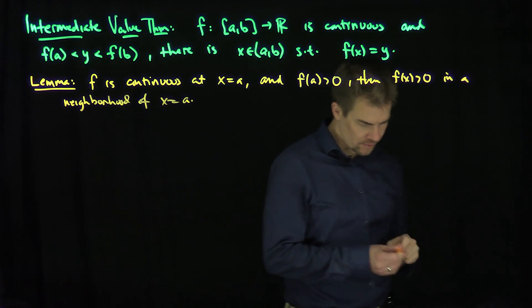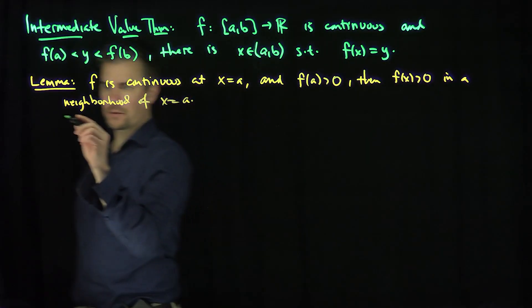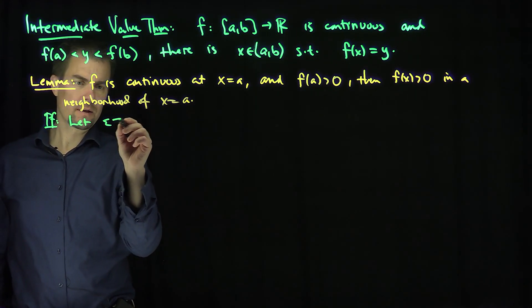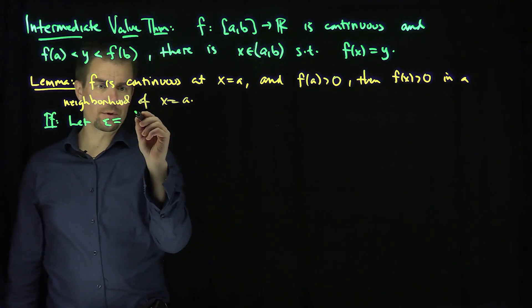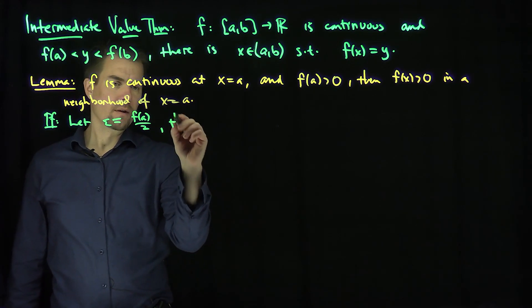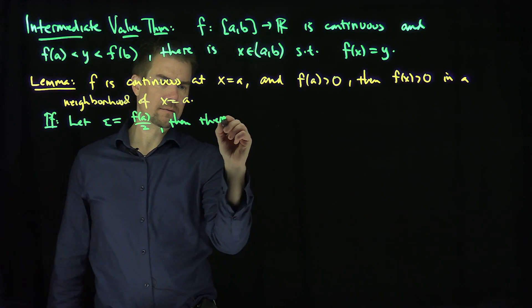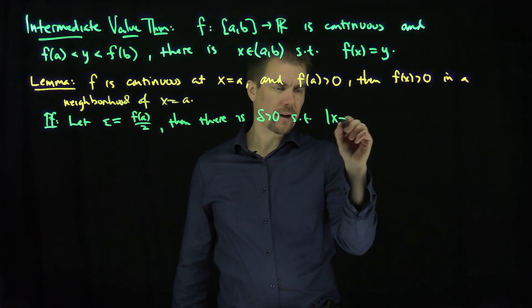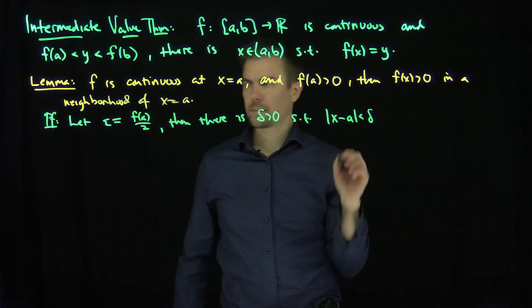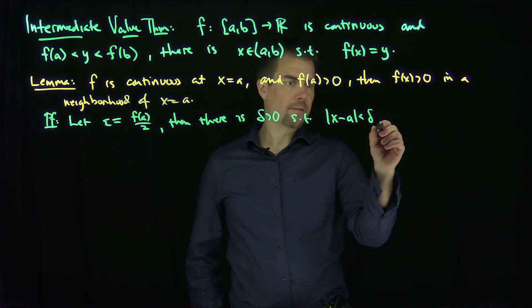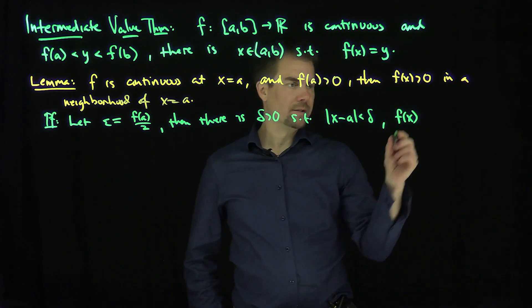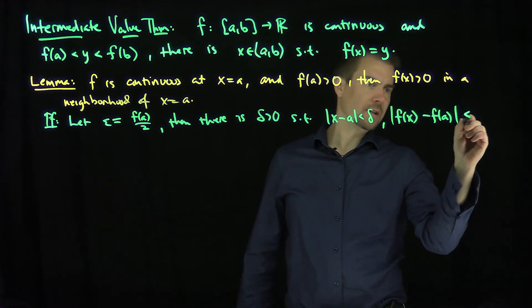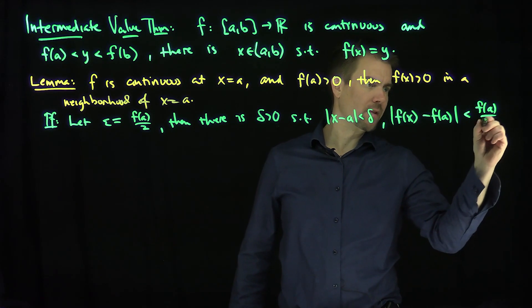Here's the proof of this lemma: Let epsilon equal f(a) over 2. Then there exists delta such that if x minus a is less than delta, then f(x) minus f(a) is less than epsilon, which in this case is f(a) over 2.